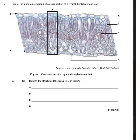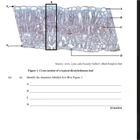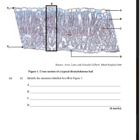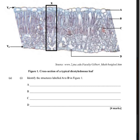Now looking at the 2011 CAPE paper, which shows a photomicrograph of the cross-section of a typical dicot leaf, asking us to identify A, B, C, and D. A is the upper epidermis, B is the palisade tissue, C is the xylem (specifically appearing as the vascular bundle/xylem), and D is the stomata.